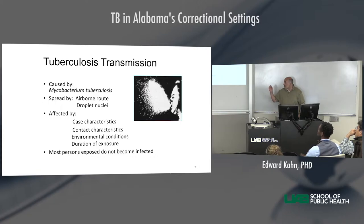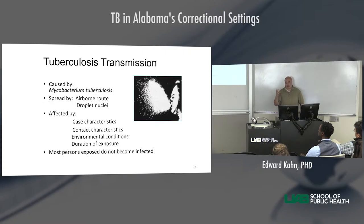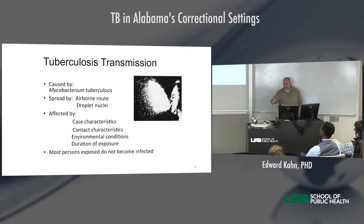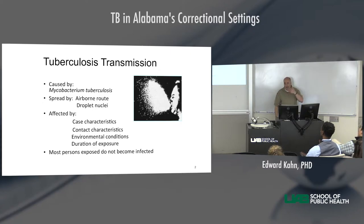TB is spread by airborne route and droplet nuclei. Droplet nuclei are basically three to five micron particles that are just the right density to remain buoyant in the air. When somebody coughs, the visible stuff that comes out of their mouth is not what infects people — those things just land somewhere. It's the invisible ones that remain suspended in the air, sometimes for 30 minutes or more.